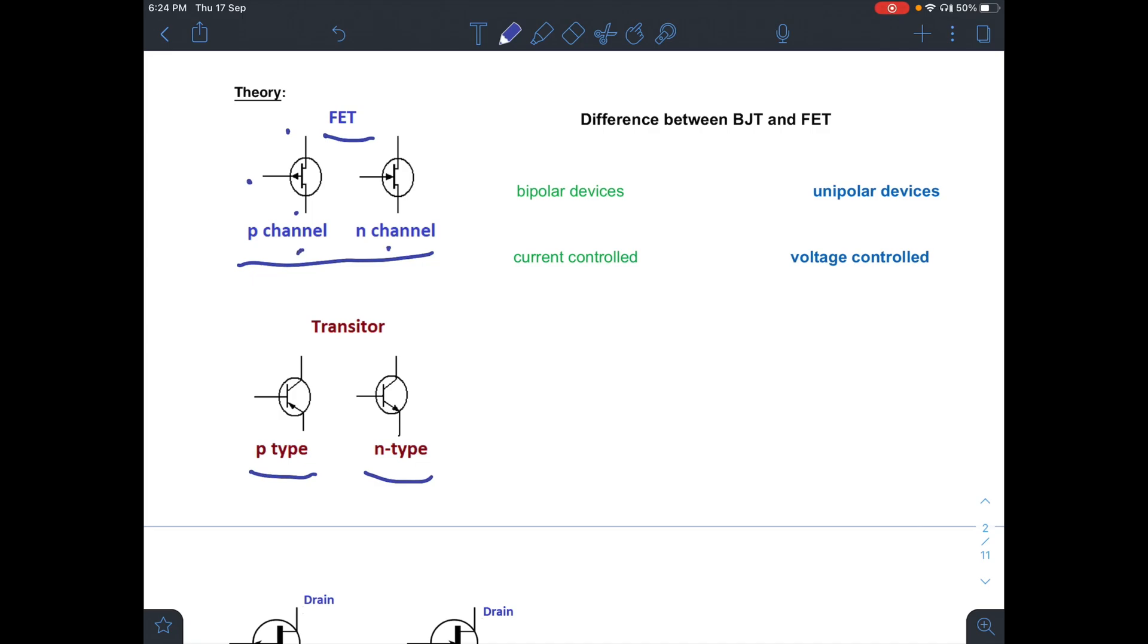What is the difference between bipolar junction transistor and field effect transistor? As the name suggests, transistor is a bipolar device, meaning the current conduction is with the help of majority as well as minority carriers. While in FET, the current conduction is by electrons or holes. Transistor is a current control device but FET is a voltage control device.